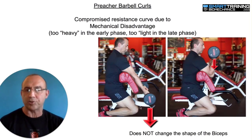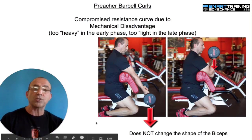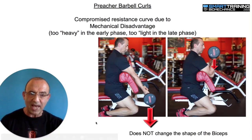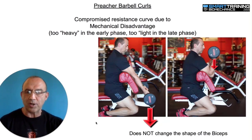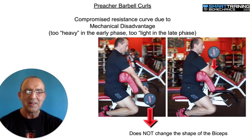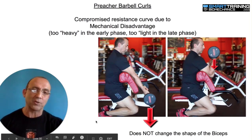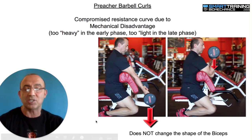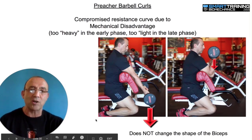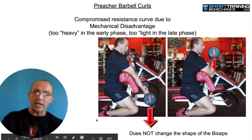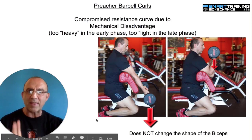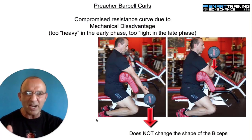You'll notice that with a preacher curl it's really heavy in the beginning and then really easy at the end. As you bend your elbow more, you improve your mechanical advantage, but your resistance is simultaneously diminishing. In other words, you're getting stronger when the weight's getting lighter, and getting weaker when the weight is getting heavier. That's why it feels so weird and backward.